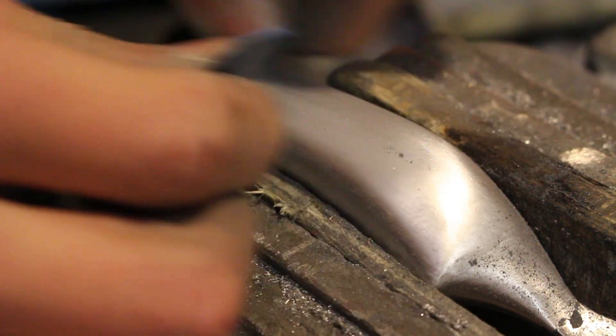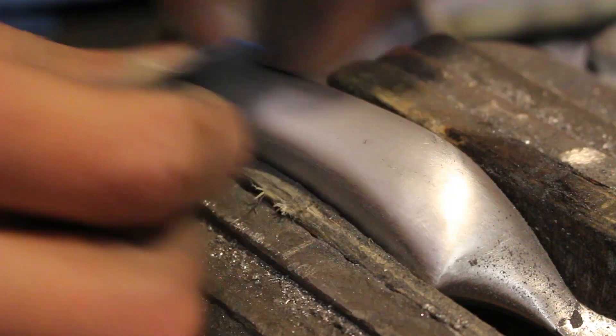It's then time to move on to wet and dry paper and this is just some aluminum oxide wet and dry paper. I start with 600 grit and slowly work my way up all the way to 2000 grit.